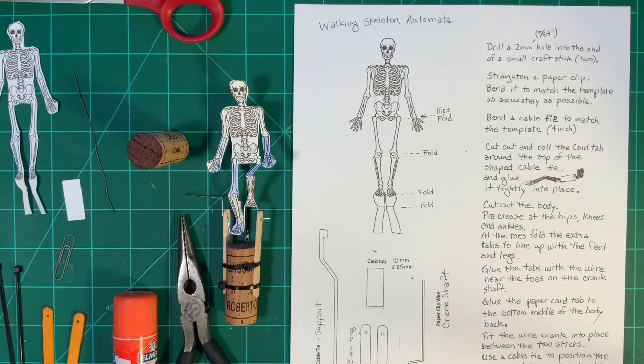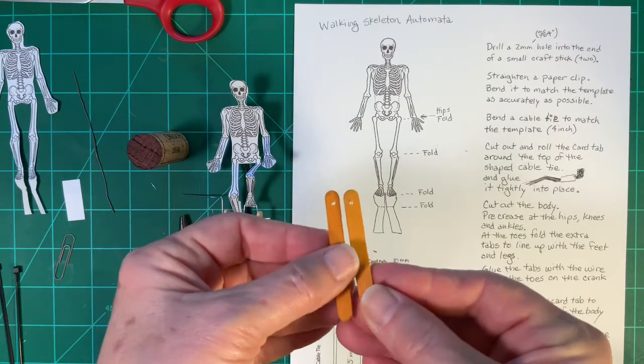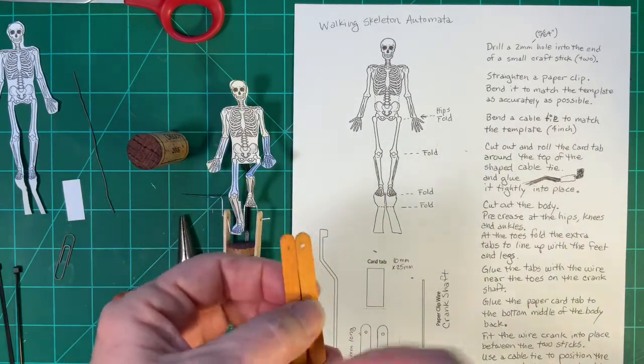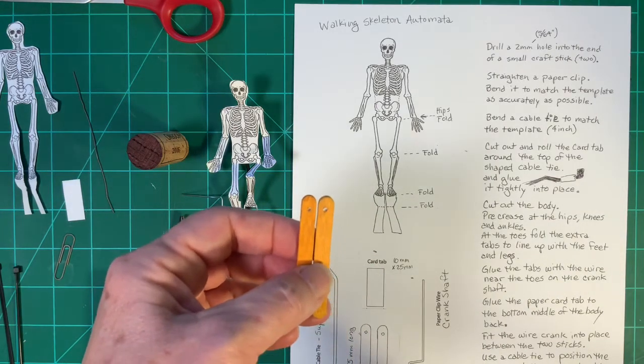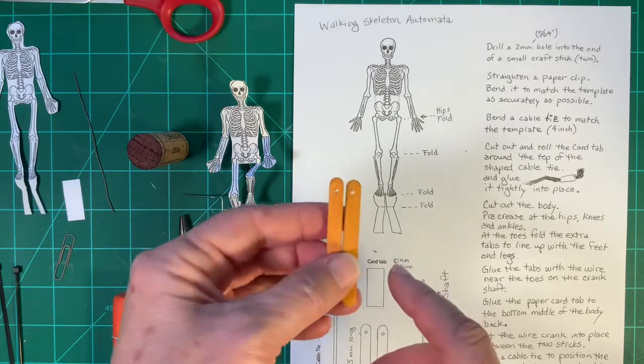First step, you will drill a hole at the end of the two craft sticks. Two millimeters in diameter or a 5/64 inch hole into the end. Be careful when you drill it so it doesn't crack the stick.